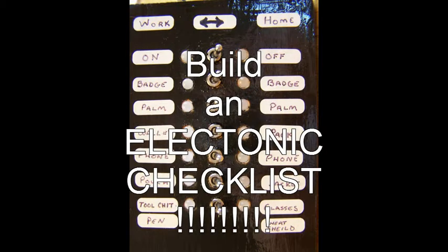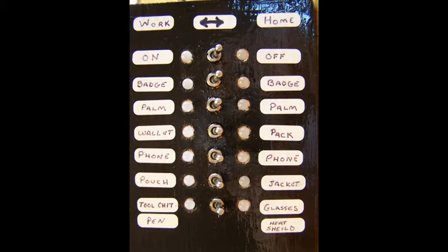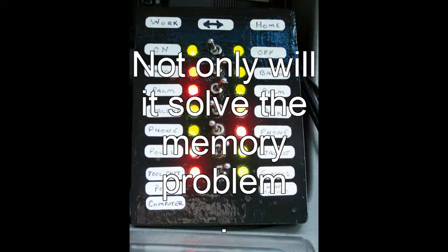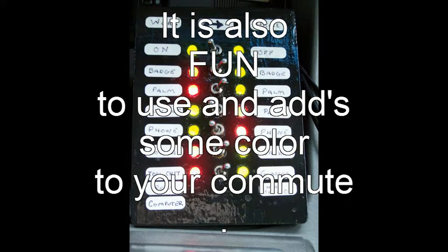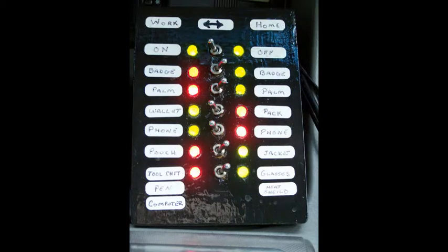Build yourself an electronic checklist. Not only will this prevent you from forgetting things, it will also add fun and colorful lights to your commute. You ought to see all the green and red lights in the middle of the night. Okay, here's how it works.